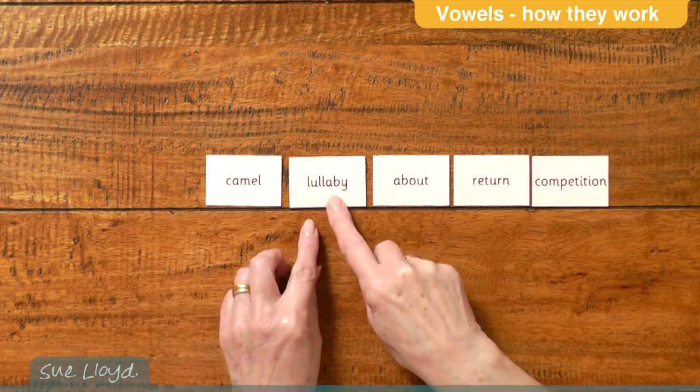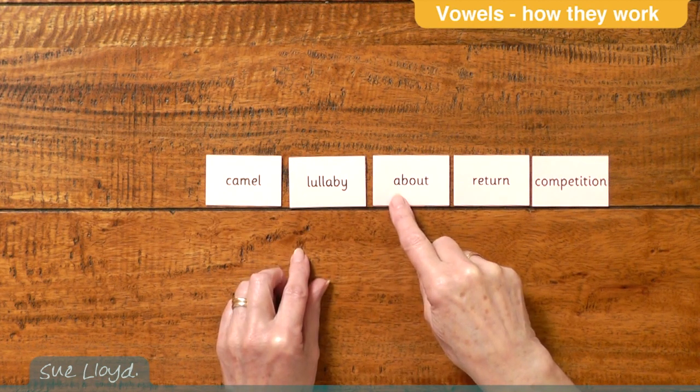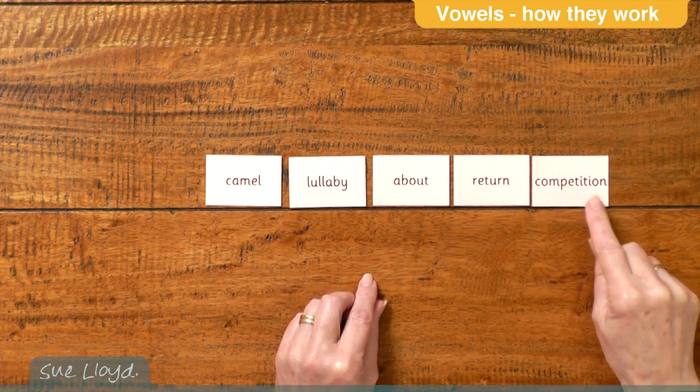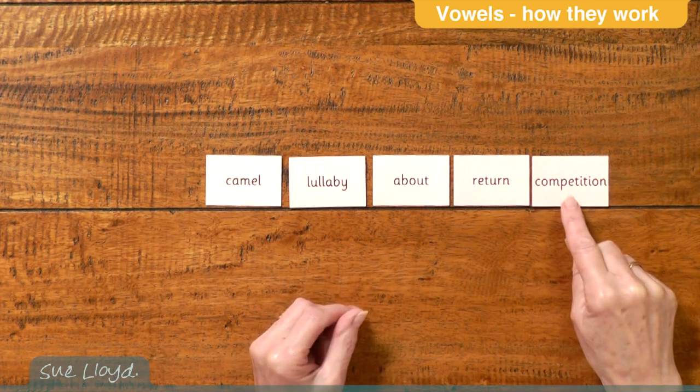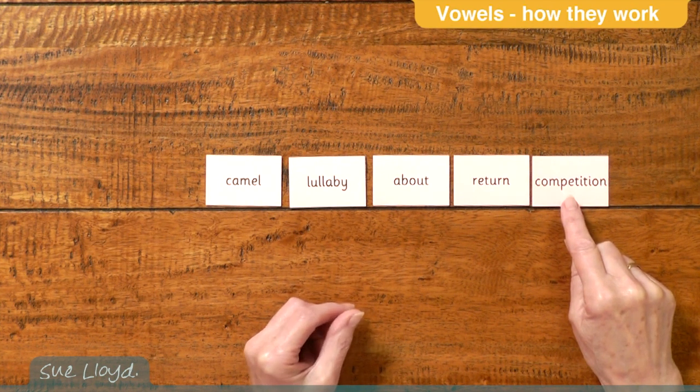In lullaby it's the a - lullaby. And it's the a here in about, the e in return, and in competition it's the com that is stressed, not the per, and the e is the schwa. It does not